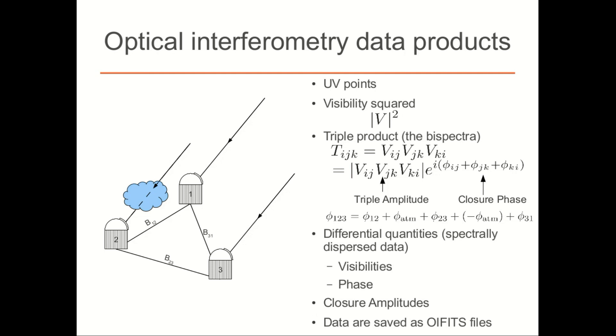If you spectrally disperse your data, you can also form differential quantities like the differential visibilities and differential phases. And then if you have a facility with four or more telescopes, you can form a quantity called closure amplitudes. All of the interferometric data is stored in a registered FITS convention called OIFITS, and that's what most modeling software uses today.